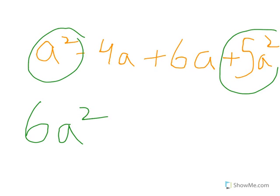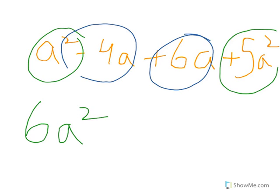And I can add the a terms: 6 minus 4 is 2, so plus 2a. The answer is 6a² plus 2a. It's very simple. Please let me know if you have any difficulties.